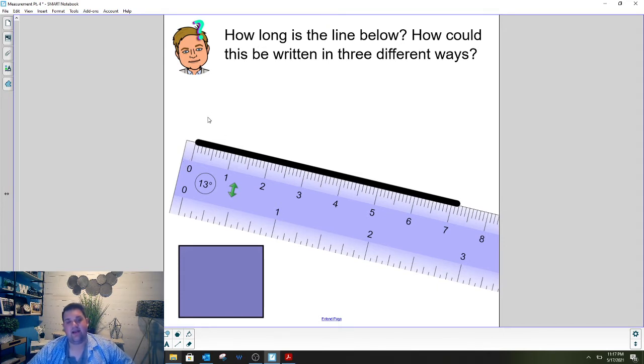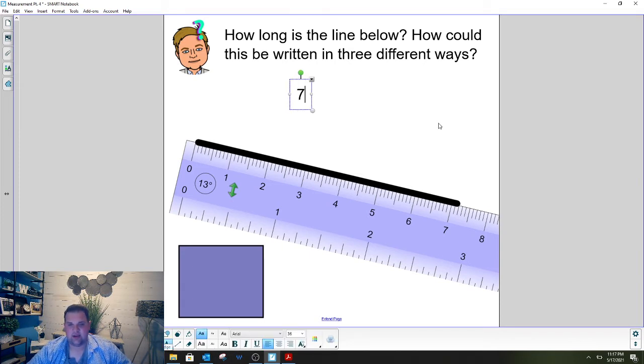So here I've got my ruler placed and I see that we've definitely got seven centimeters here. So we've got seven centimeters and then we're two lines past. So I've got a seven and I've got two. What would I write for the measurement of this line?